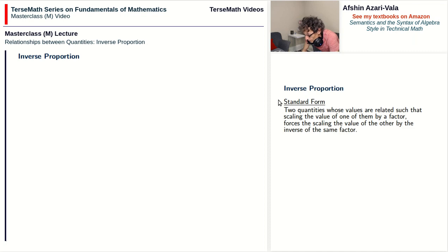Inverse proportion problems are problems where there are two quantities whose values are related such that scaling the value of one of them by a factor, that means multiplying the value of one of them by a number, forces the scaling of the value of the other by the inverse of the same factor.